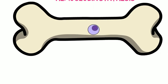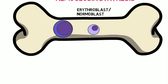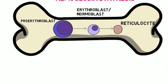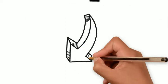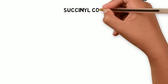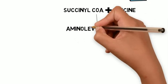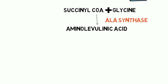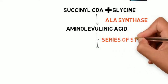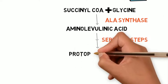Hemoglobin is synthesized mainly in the bone marrow within erythroblasts (also known as normoblasts), from the pro-erythroblast stage through to the reticulocyte stage. Inside these cells, succinyl CoA from the Krebs cycle combines with glycine, and aminolevulinic acid (ALA) is formed by ALA synthase. After a series of steps, protoporphyrin is formed.